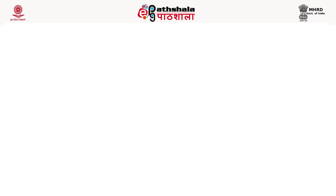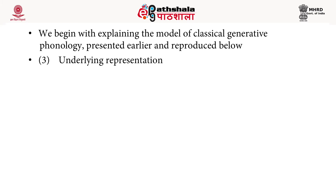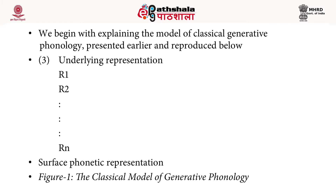The generative phonology model has two different levels of structure: underlying representation and surface representation, with phonological rules in between. The function of underlying representation is to show that two related morphemes are actually related, because both come from the same underlying representation. For example, the native speaker somehow relates the words 'divine' and 'divinity'.